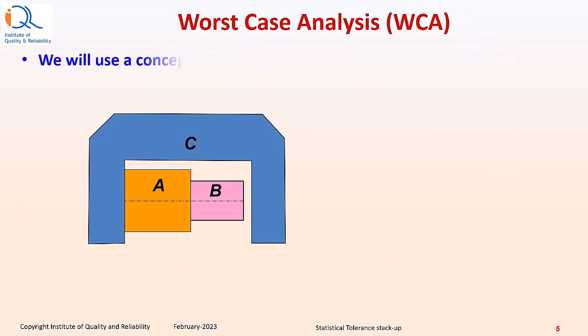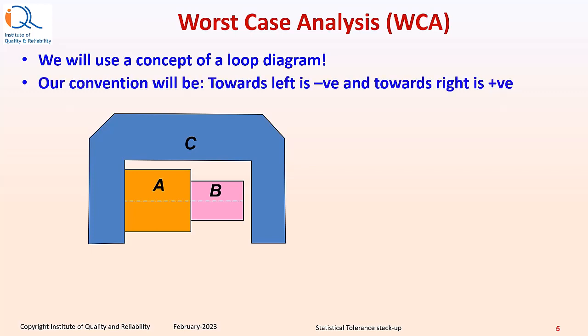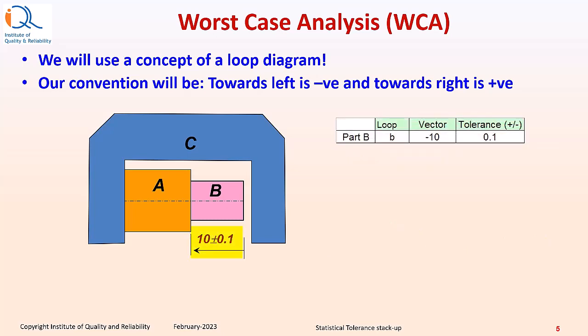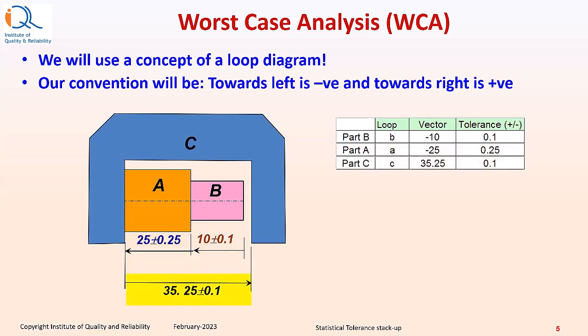In WCA, a concept of loop diagram is often used. Our convention will be towards left is negative and towards right is positive. So, we will start with B that is 10 plus minus 0.1. Then we go to A that is 25 plus minus 0.5, and then we come back to the right surface of C which is 35.25 plus minus 0.1. We get a minimum gap of minus 0.2 and maximum gap of plus 0.7.